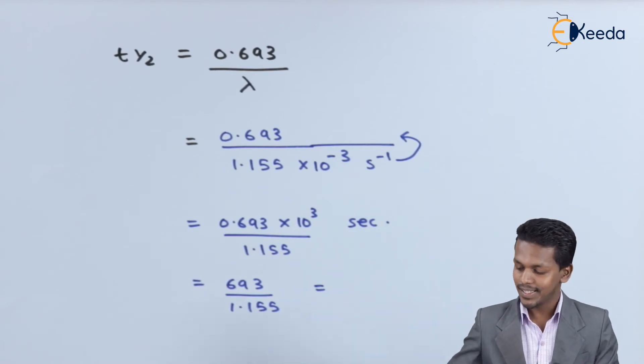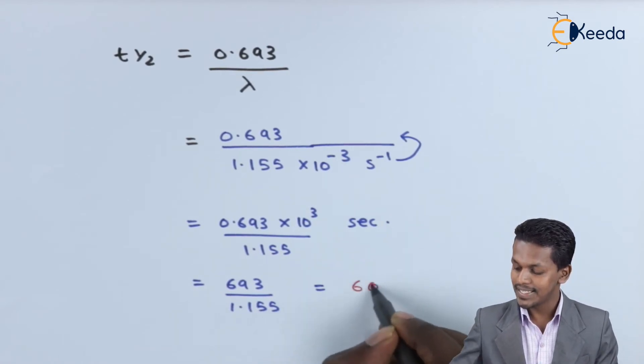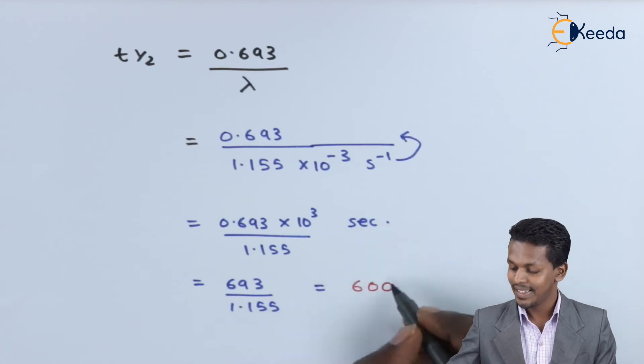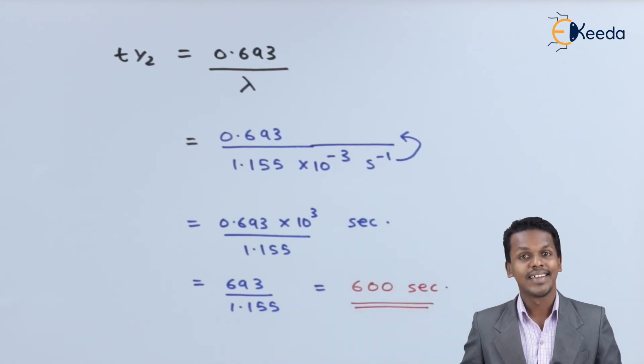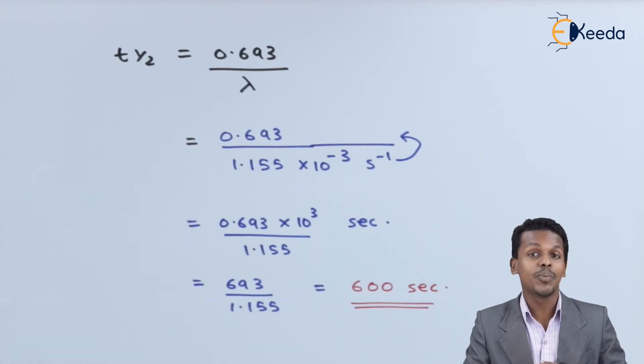We have got the value of t_half as 600 seconds. That's it, this is how it was very simple. This was numerical number two and there are many numericals I am going to talk about.